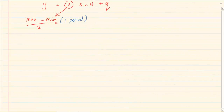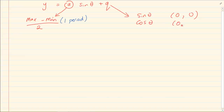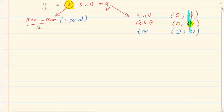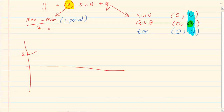When talking about q, we must know the starting points of the graphs. For sin theta, the starting point is (0, 0). For cos, it is (0, a). For tan, it is also (0, 0). The value of q depends on how far the graph has shifted from these starting points. For example, if a tan graph should have started at 0 but is now starting at 2, then q equals plus 2.